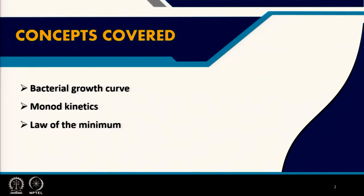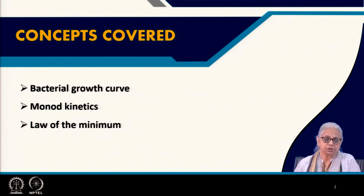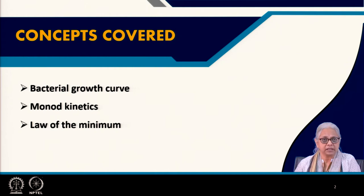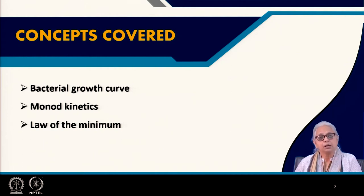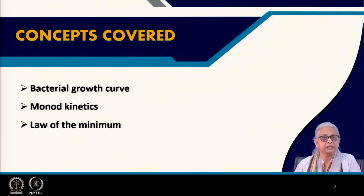The topics we are going to cover in this lecture are: the general or generic bacterial growth curve, we will derive Monod kinetics — going through the entire derivation both mathematically and experimentally — and the last part is the law of the minimum.